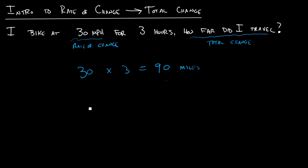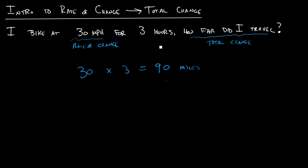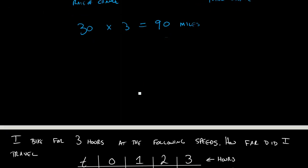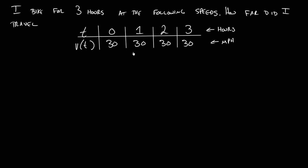And so we can interpret this same problem also in a table and a graph form. How would this look in a table to figure out that I traveled 90 miles over those 3 hours? And so in this table, we're just conveying the same information, right?